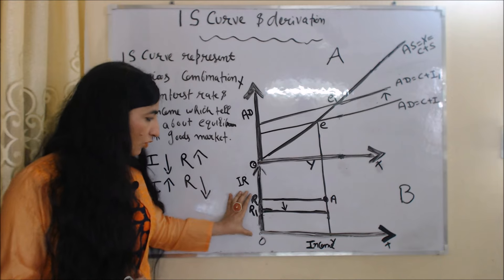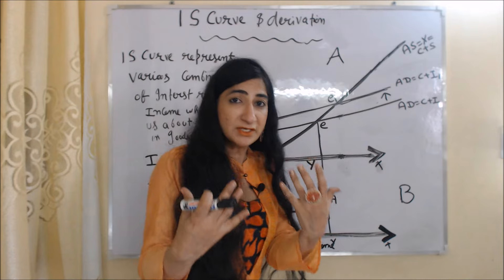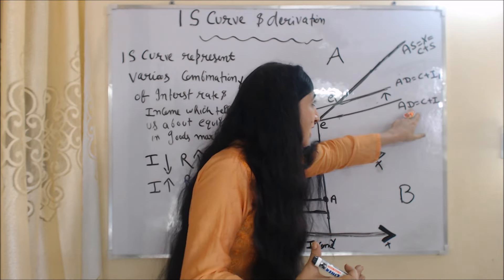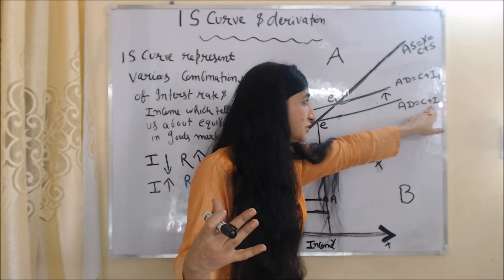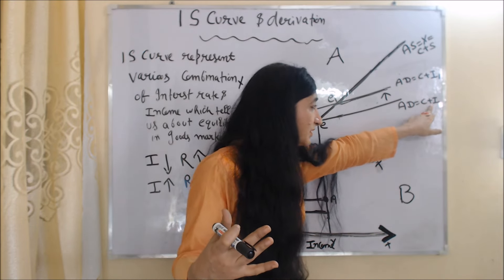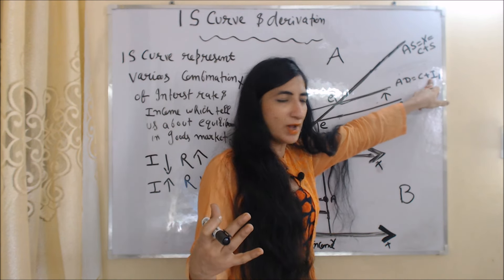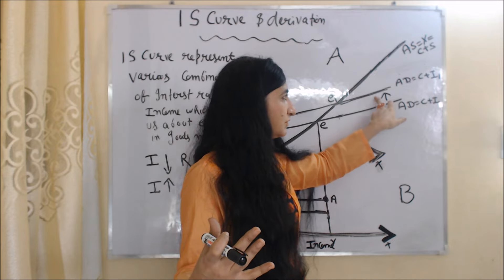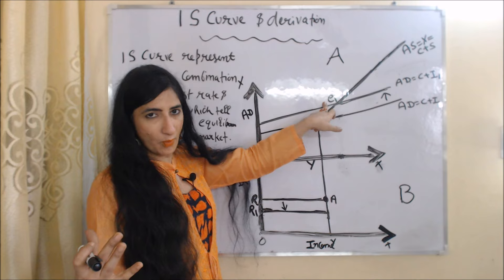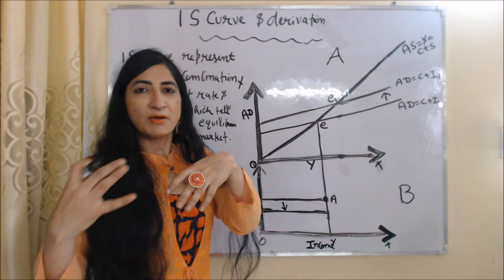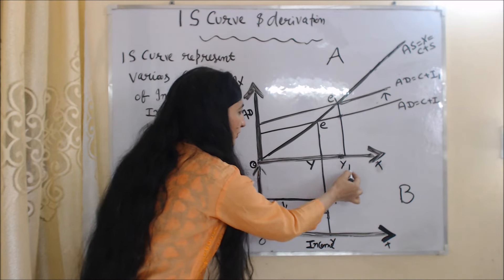As interest rate falls from OR to OR1, our investment increases. When investment increases, our aggregate demand curve shifts forward, because aggregate demand includes consumption plus investment. Our previous investment was I and new investment is I1, so the aggregate demand curve shifts forward. Our new equilibrium point is E1. As investment increases, our income also increases from OY to OY1.